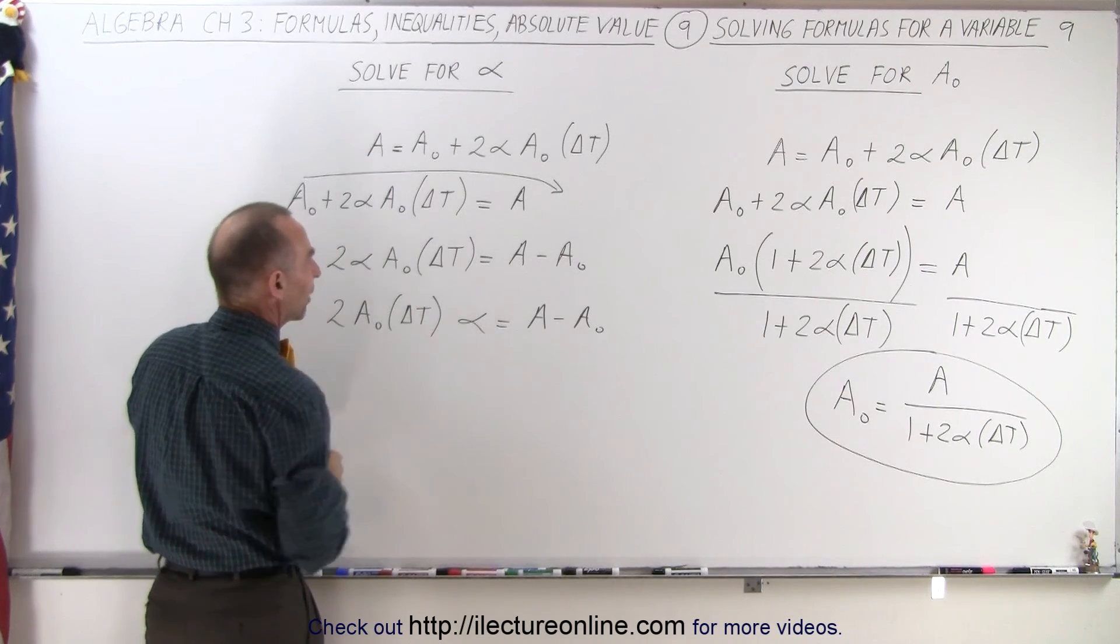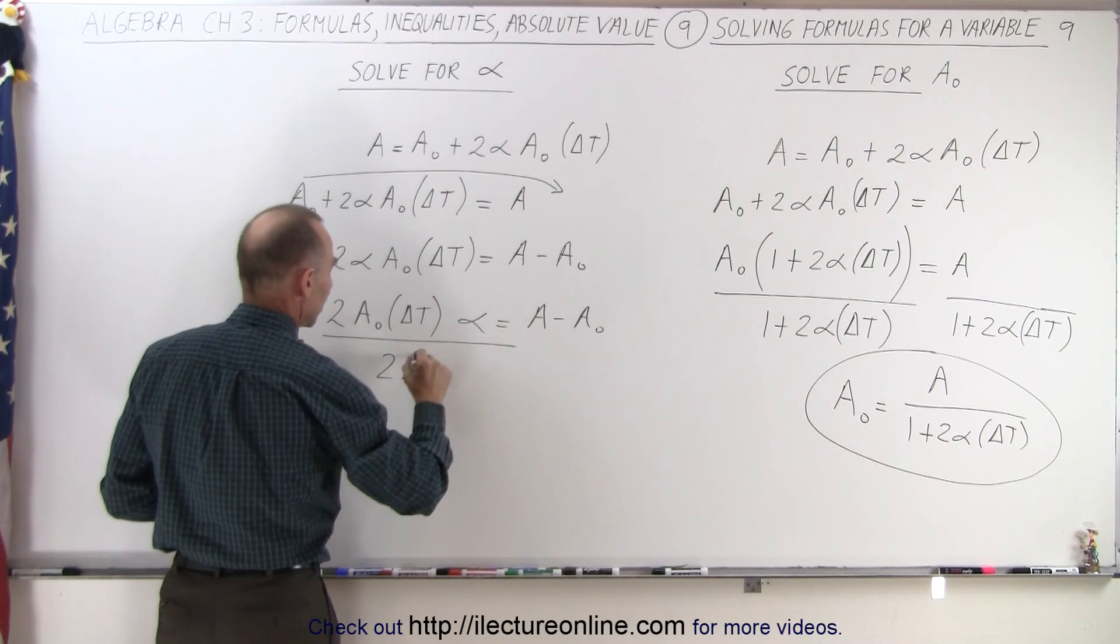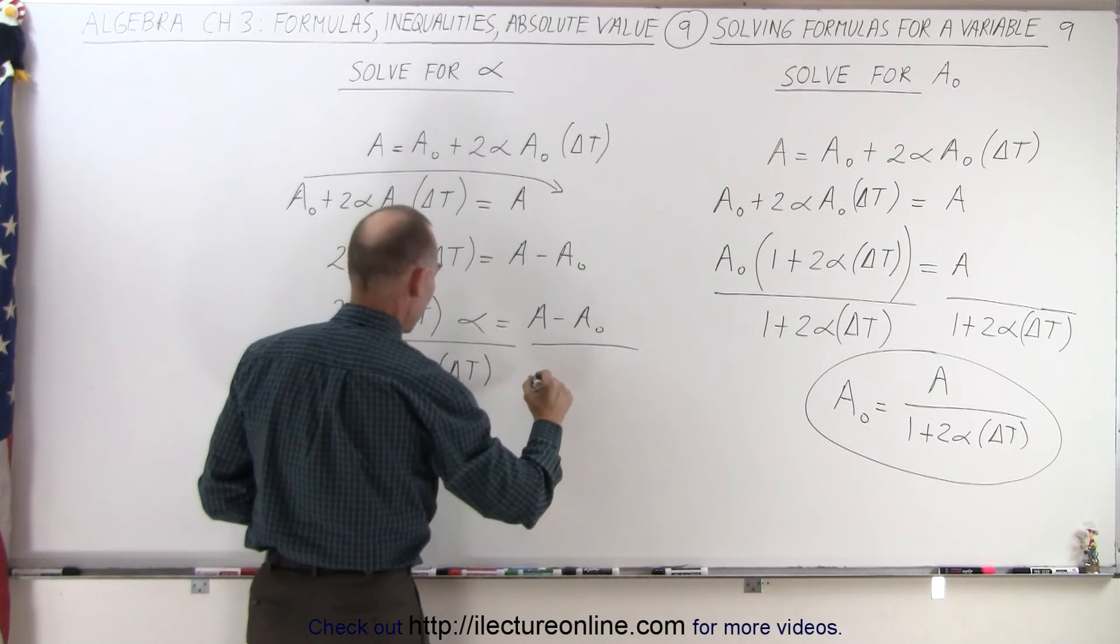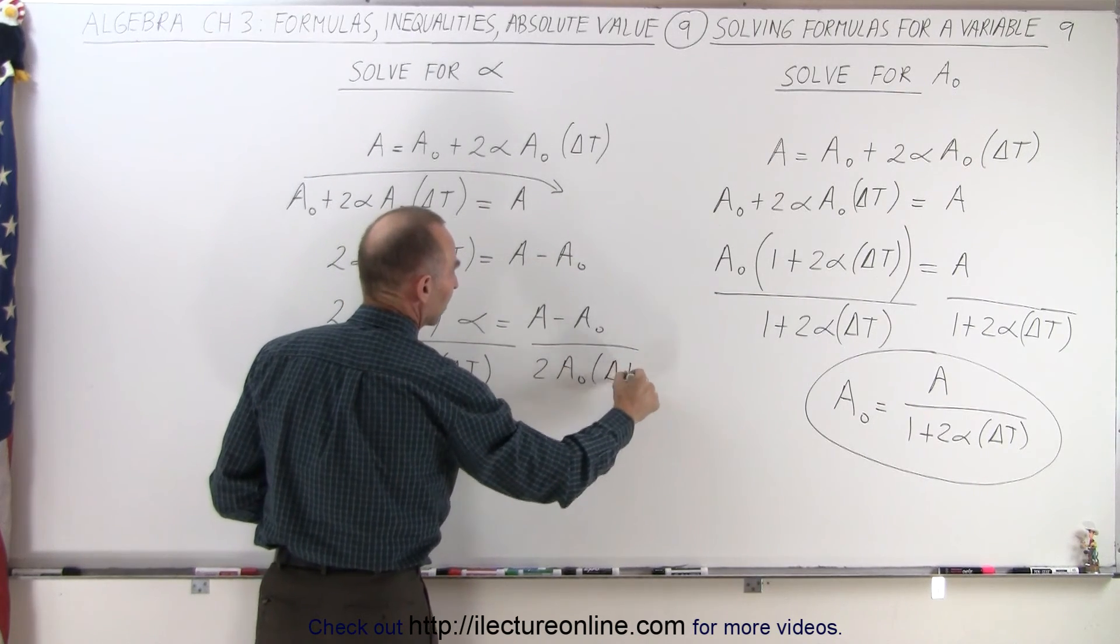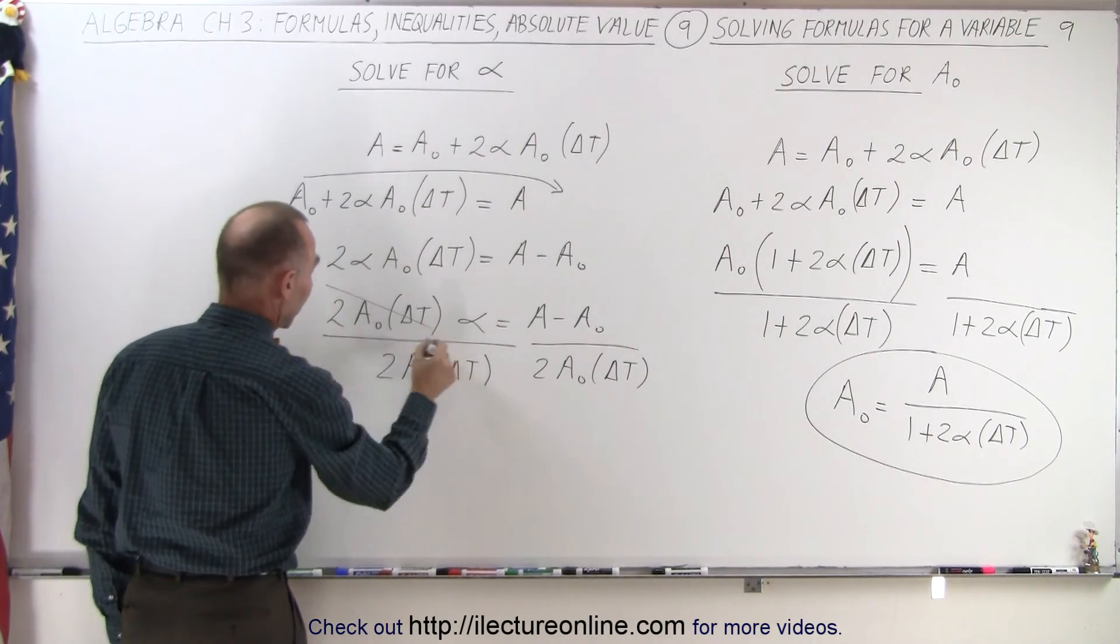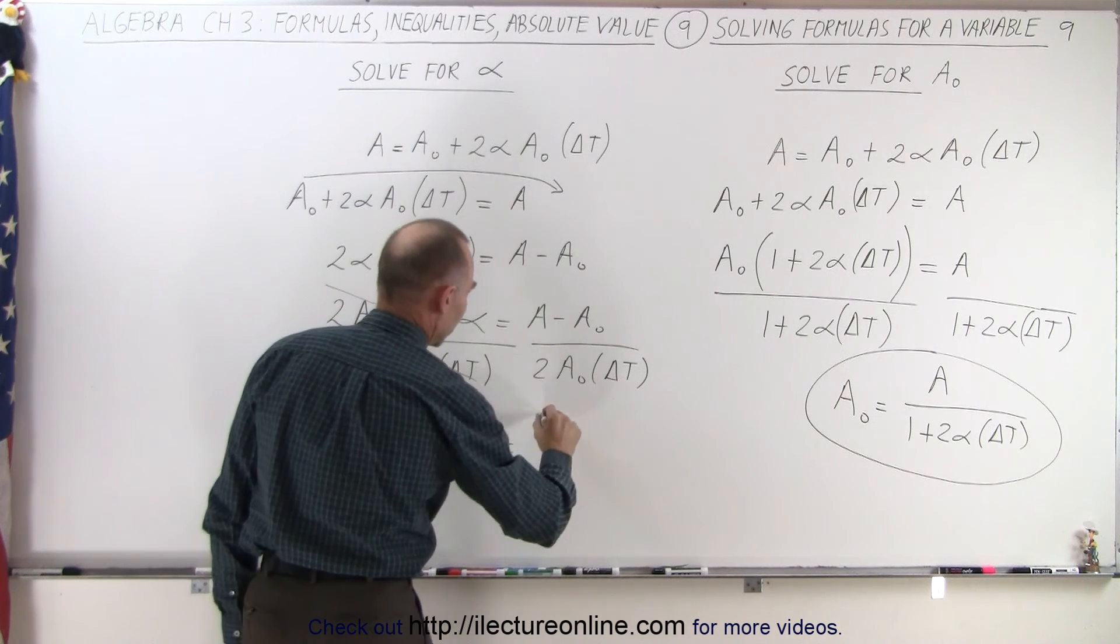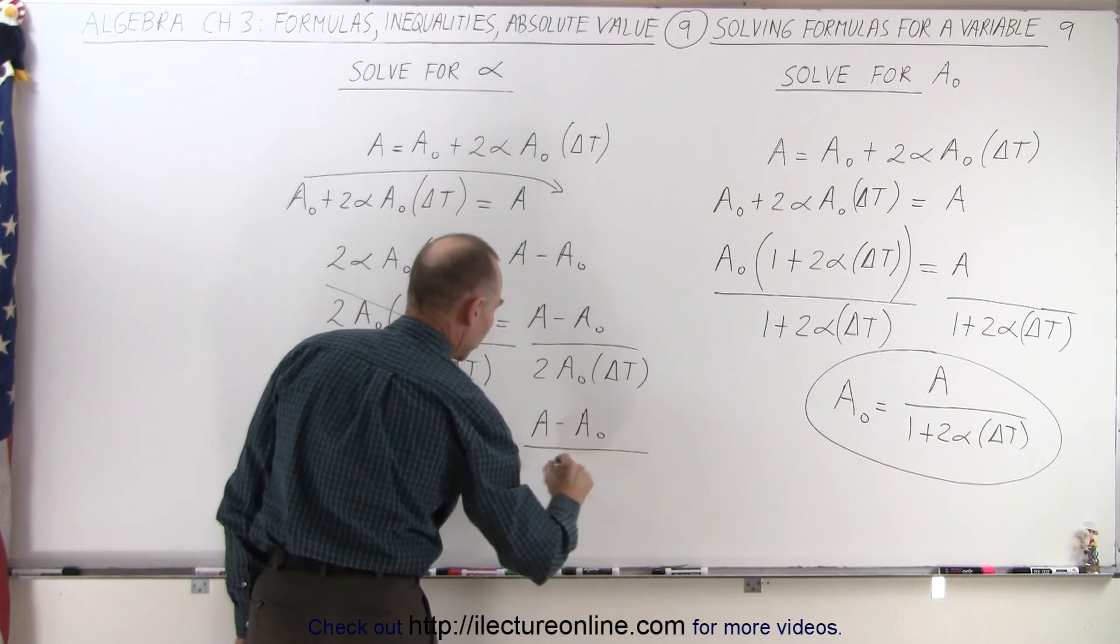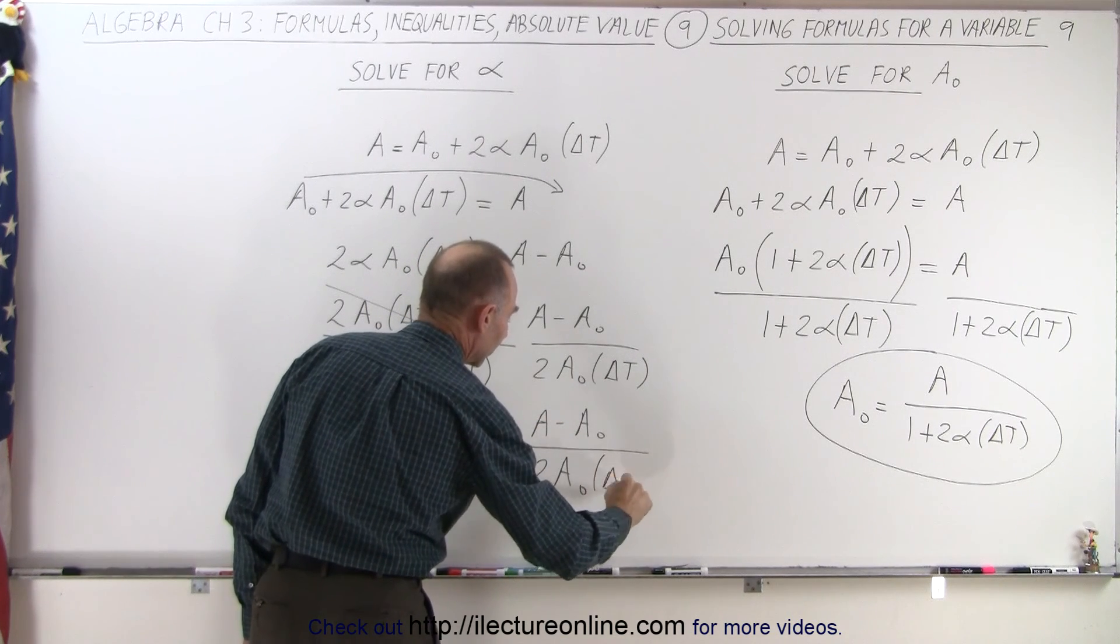We see everything is multiplied together. So on the left side, I'm going to divide that by 2 A sub nought times delta T. And on the right side, I'm going to do the same, 2 A sub nought times delta T. So now on the left side, you can see that these cancel each other out. I end up with just an alpha is equal to the numerator A minus A sub nought. And in the denominator, I have 2 A sub nought times delta T.